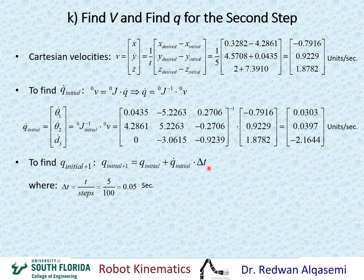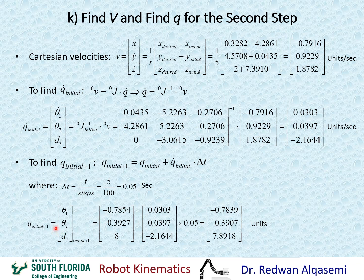With all required values available, we plug them in: Q initial plus 1 equals Q initial plus Q dot initial times 0.05. This yields the second-step joint values, where the first two elements are in radians and the third is in length units.